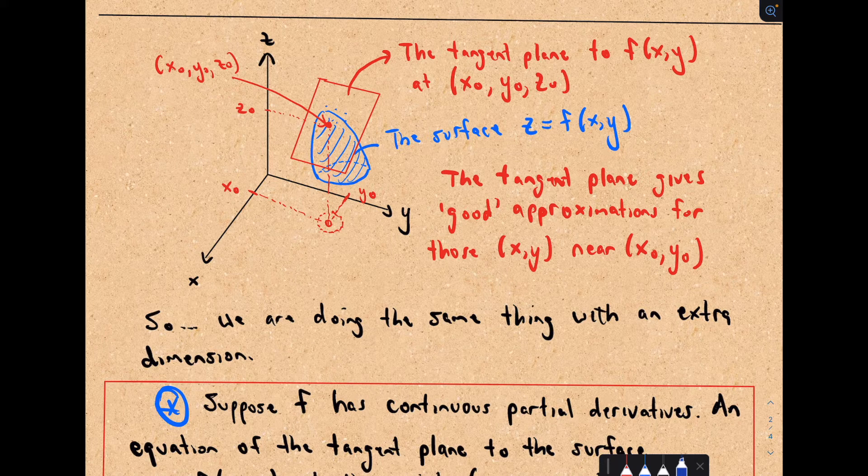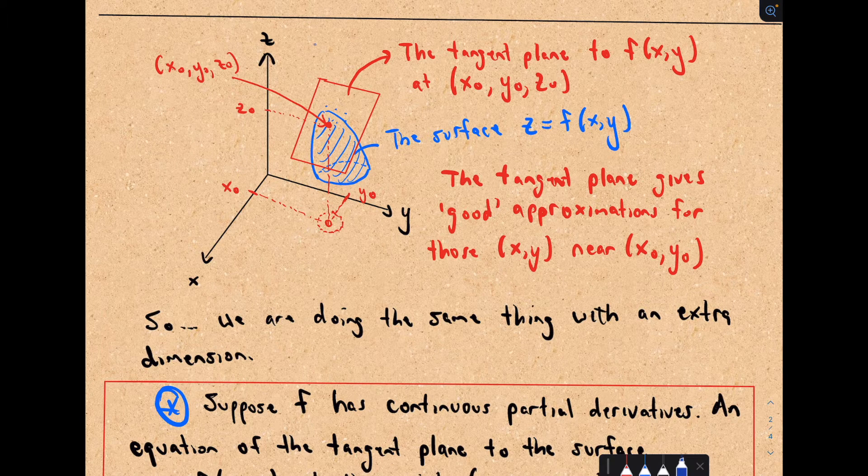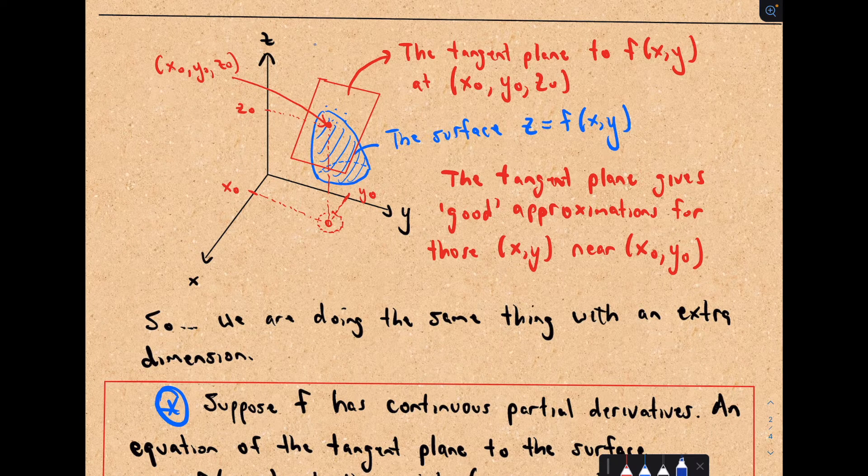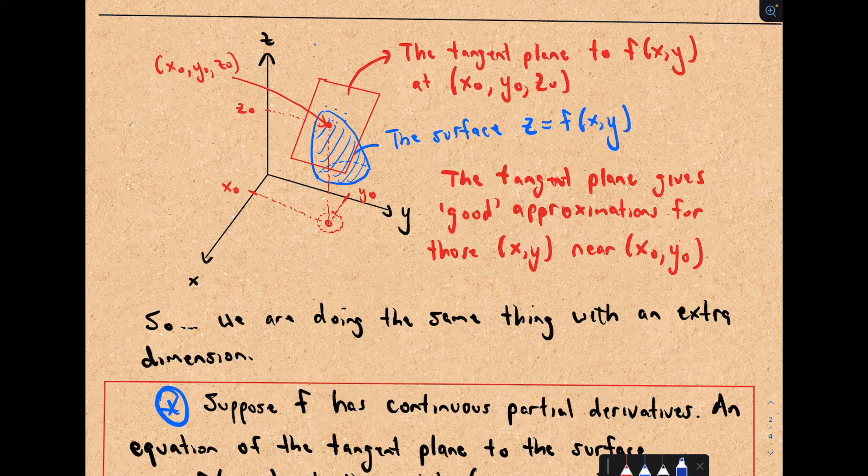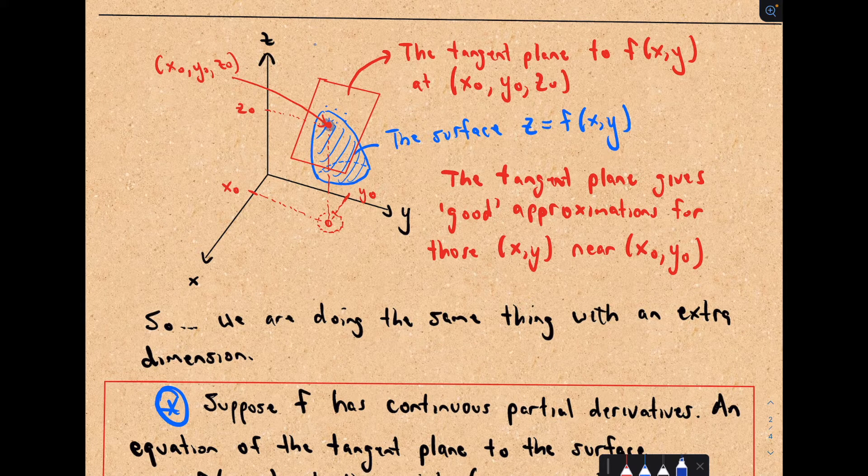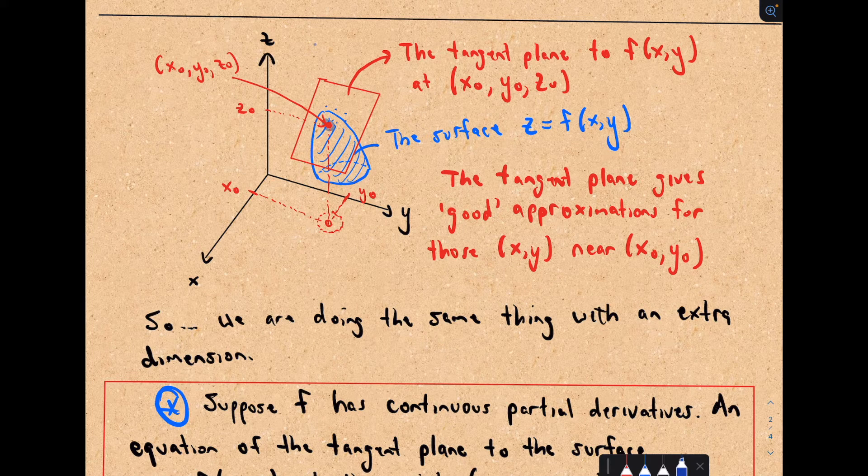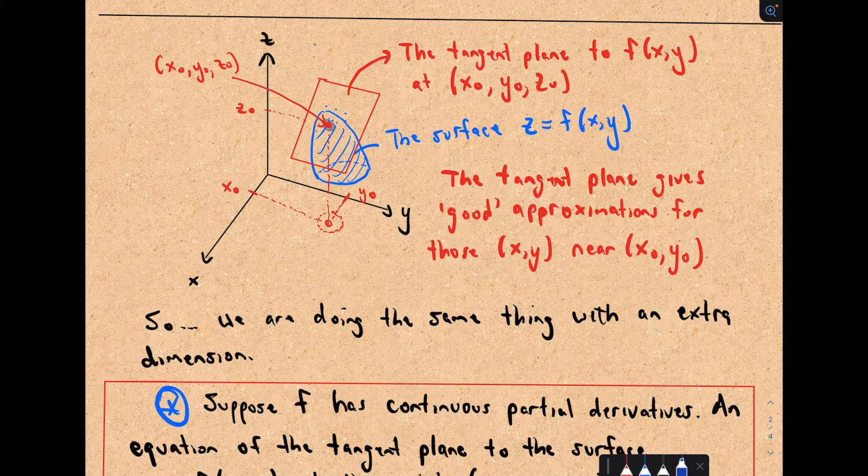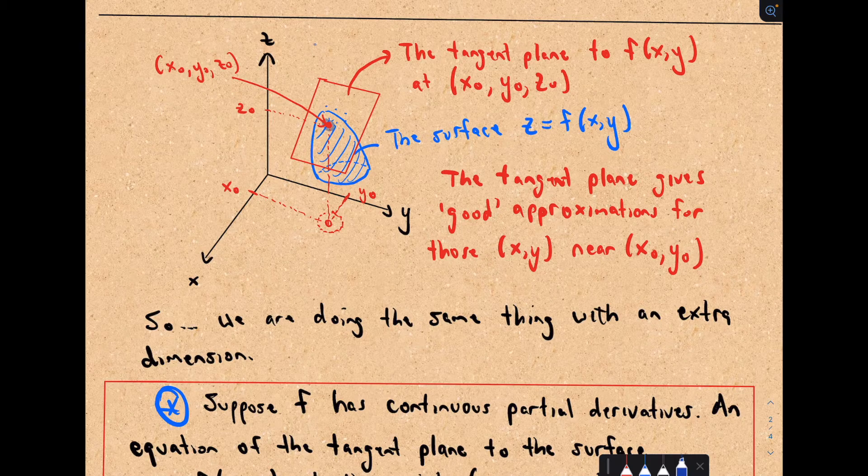So you take this little piece of paper, and the idea is that little piece of paper, the values on that tangent plane close to whatever point you picked, the values on that tangent plane are going to be close to the true values. So we're just doing the same thing now, it's just we're doing it in three dimensions.